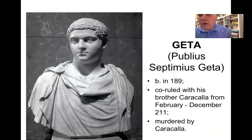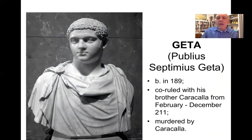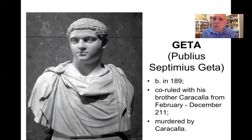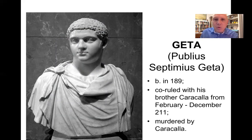Here is one of her sons — Geta, Publius Septimius Geta. He was born in 189 and co-ruled in 211 after Septimius Severus's death, alongside his brother Caracalla. It was a very short rule for Geta — he only ruled between February and December of 211. At the end of that year, Caracalla had his brother murdered.